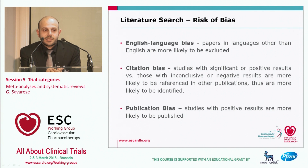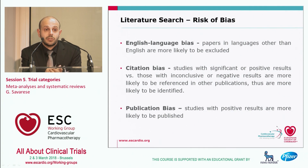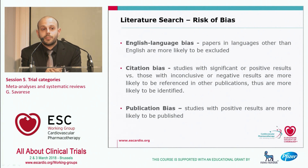There is always a risk of bias in systematic reviews and meta-analyses. First, there is English language bias: some studies are published in languages other than English, and not considering them introduces bias. There is also dissertation bias, meaning studies with significant results are more likely to be reported compared with studies with neutral results. And there is publication bias.